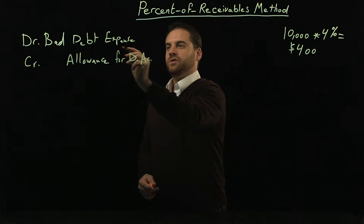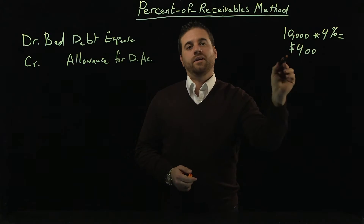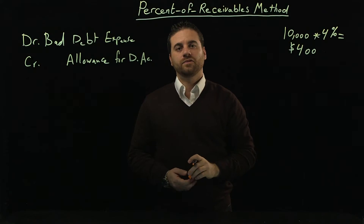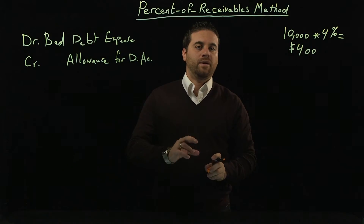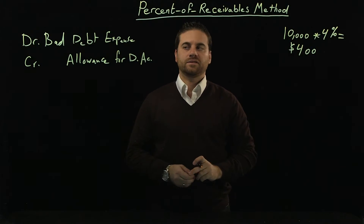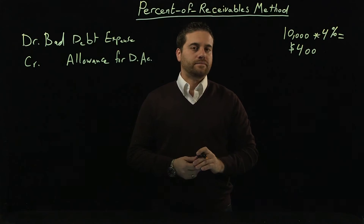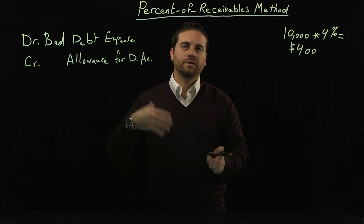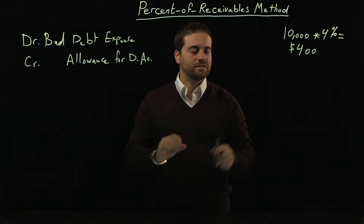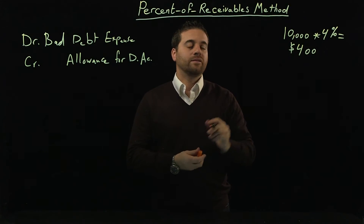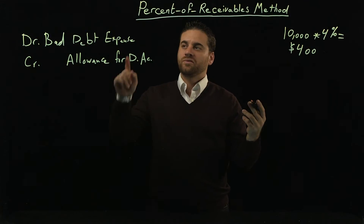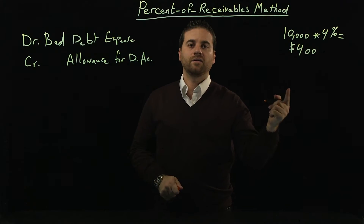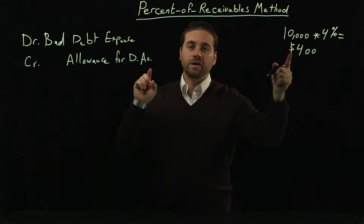The $400 is not what we should have in the expense, because that amount is the ending balance that we should have for the allowance for doubtful account. It's not the amount that has to be added to the bad debt expense and the allowance for this year. Remember, journal entries are always recording the changes — what happened for the period — not recording the ending balances. So we need one more piece of information to find out what amount has to be recorded in the journal entry: we need to know what was the ending balance for the allowance for doubtful account before our new estimate of $400.